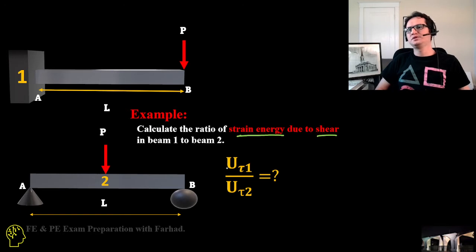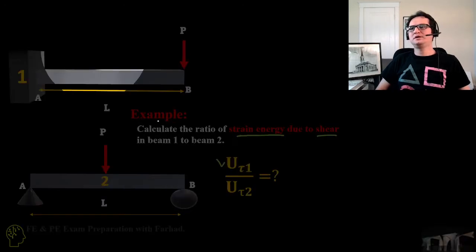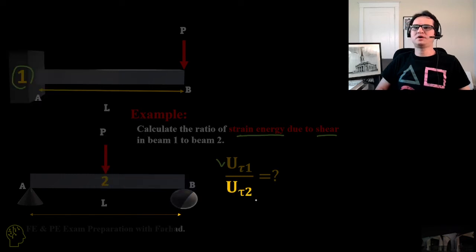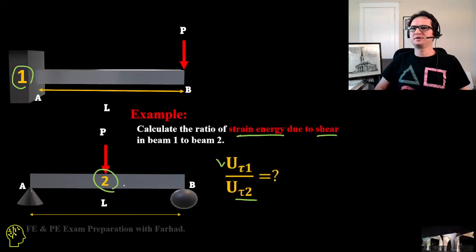So that's U_τ1, which is here, and the other is U_τ2, which is for the second beam. We want to calculate this ratio.